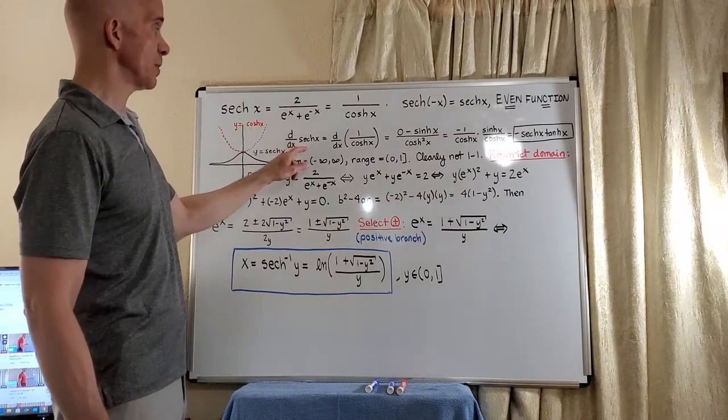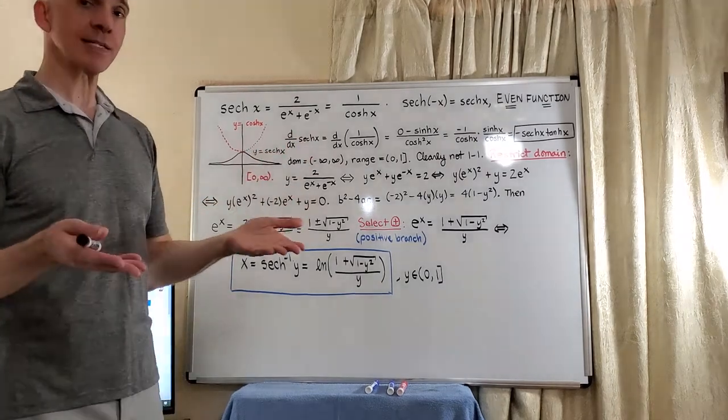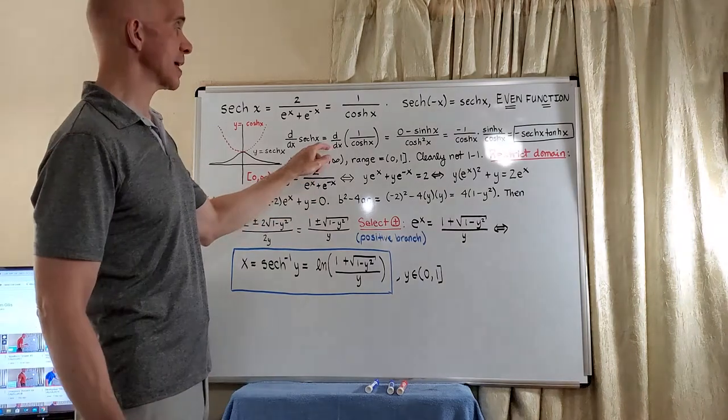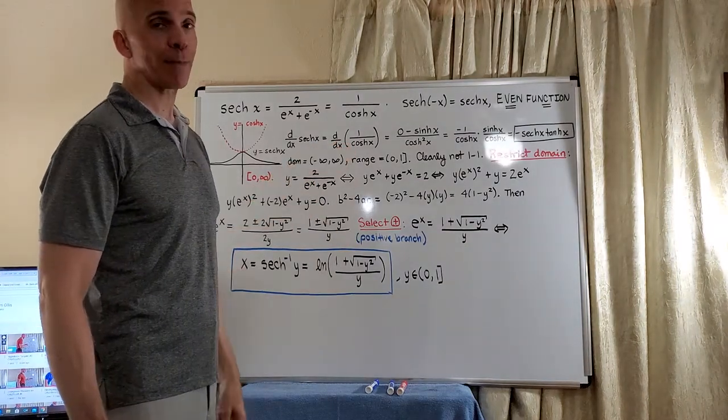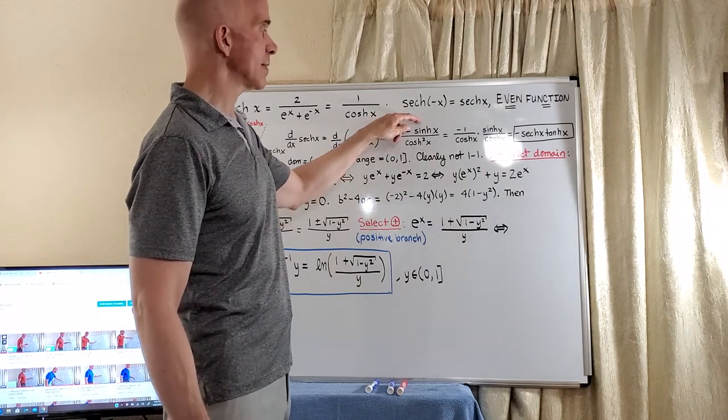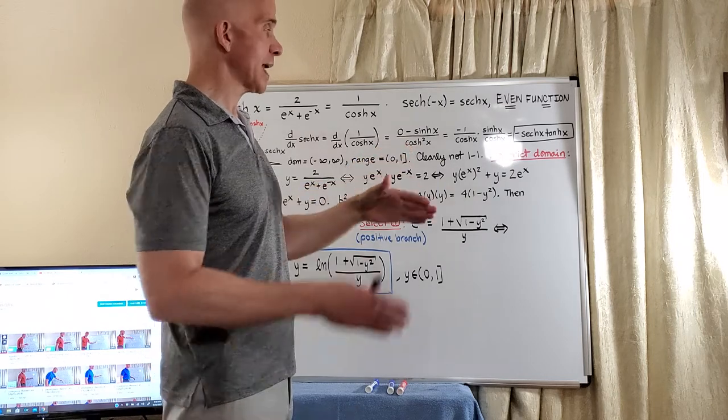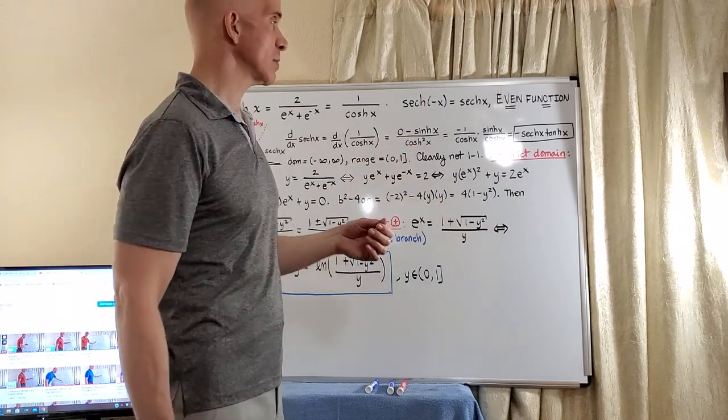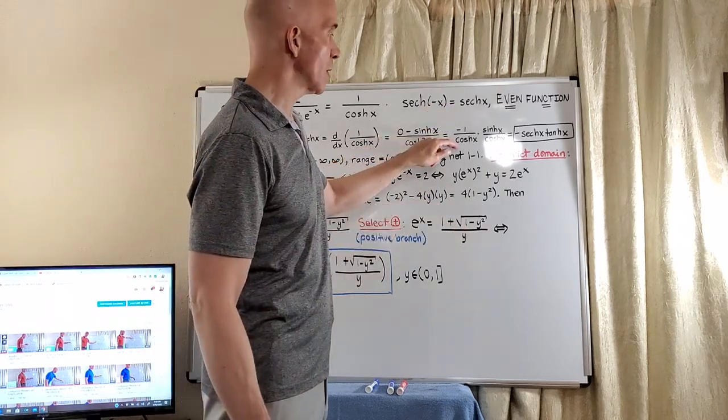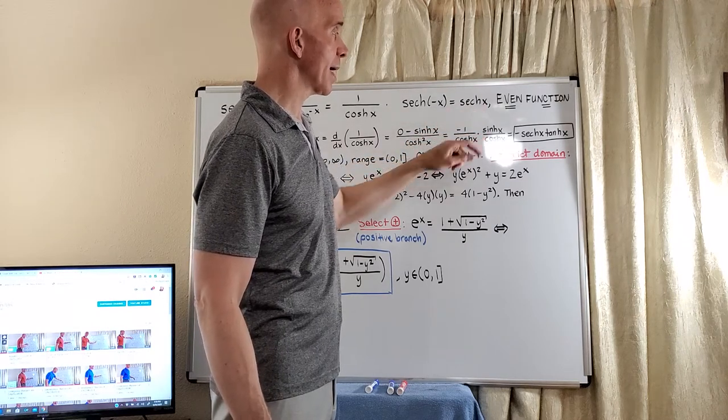Now, in order to compute the derivative of the hyperbolic secant to also give us a nice integral formula, we can just take the derivative of one over hyperbolic cosine. So we can apply the quotient rule. So we'll get zero minus the hyperbolic sine divided by hyperbolic cosine squared. And now let's just spread out the hyperbolic cosine. That'll give us a negative one over hyperbolic cosine times hyperbolic sine divided by hyperbolic cosine.